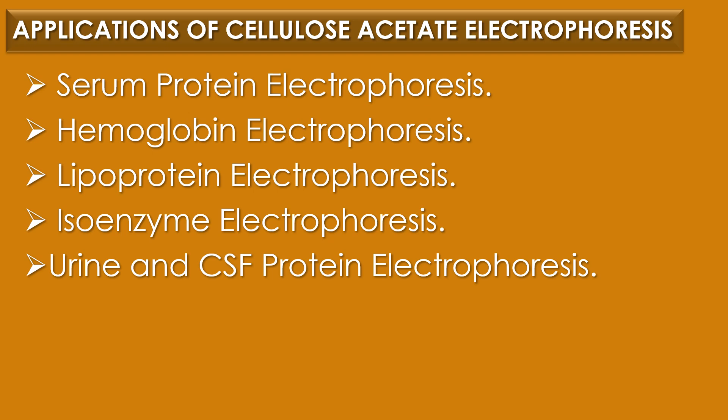The second application is hemoglobin electrophoresis. Cellulose acetate electrophoresis can be used to separate and identify different hemoglobin variants, which is important in diagnosing conditions such as sickle cell anemia and thalassemia. The third application is lipoprotein electrophoresis, used to separate and analyze different lipoproteins in blood samples, helping in the study of lipid metabolism and cardiovascular diseases.